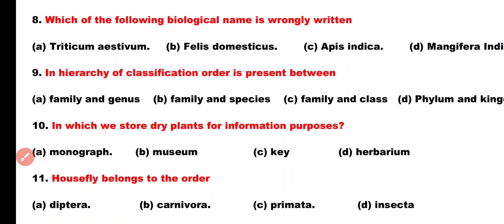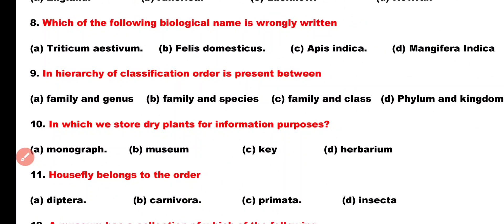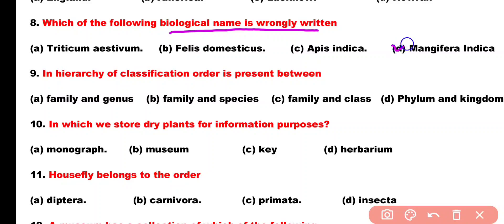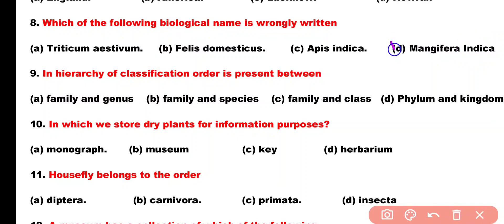Question number 8. Which of the following biological names is wrongly written? Option A: Triticum aestivum, Option B: Phalus domesticus, Option C: Apis indica, Option D: Mangifera indica. Correct answer is Option D, because in Mangifera indica the species name 'indica' has its first letter written in capital, which is incorrect.